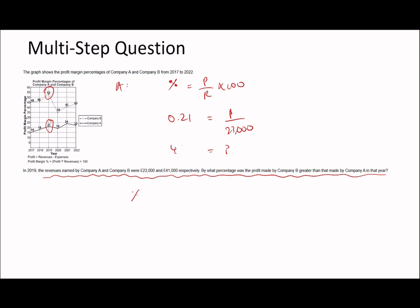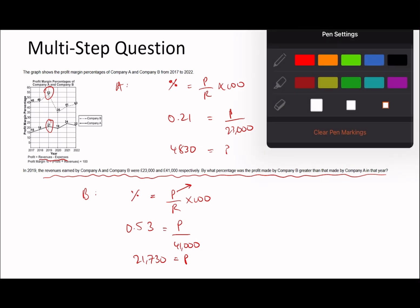For B: percentage equals profit divided by revenue times 100. The percentage is 53%, so 0.53 times 41,000 gives a profit of 21,730. Some of you may wonder why I didn't split it into revenue and expenses again — the reason is the question doesn't mention expenses at all. I only broke it down that way last time because the question specifically mentioned expenses. No need to do that here.